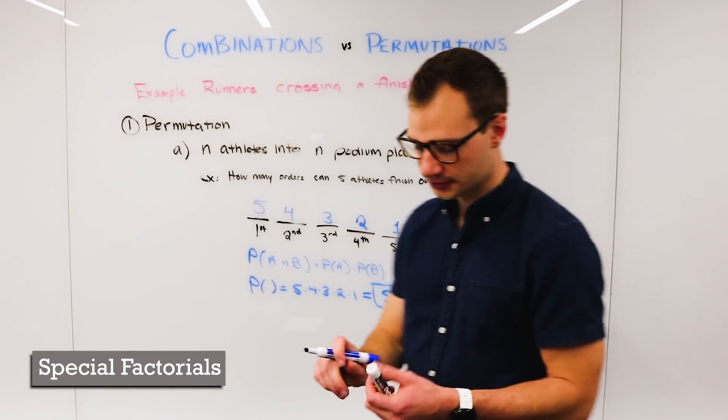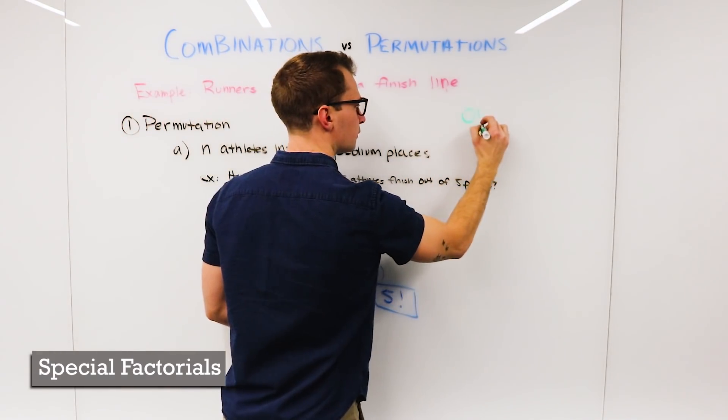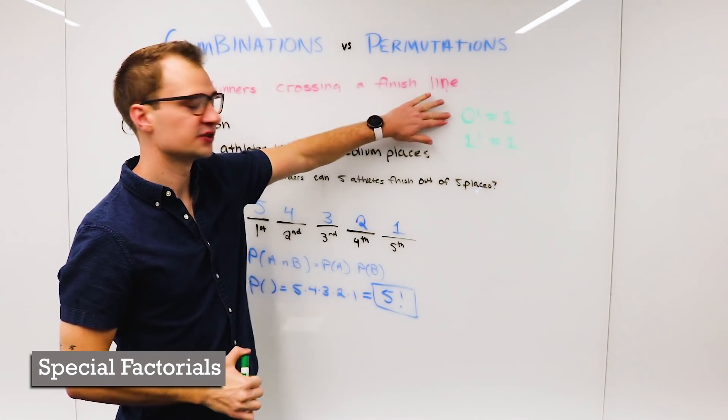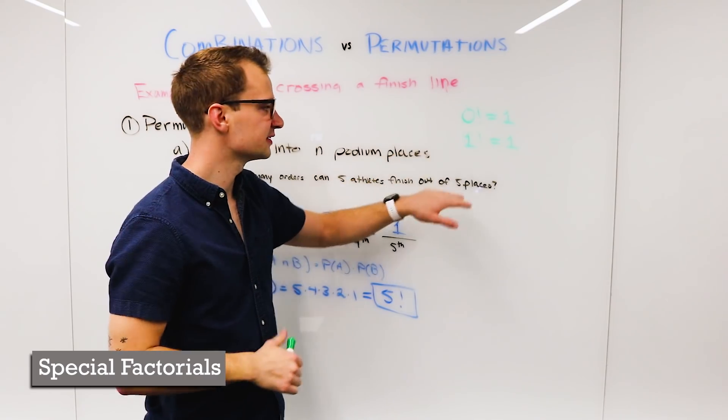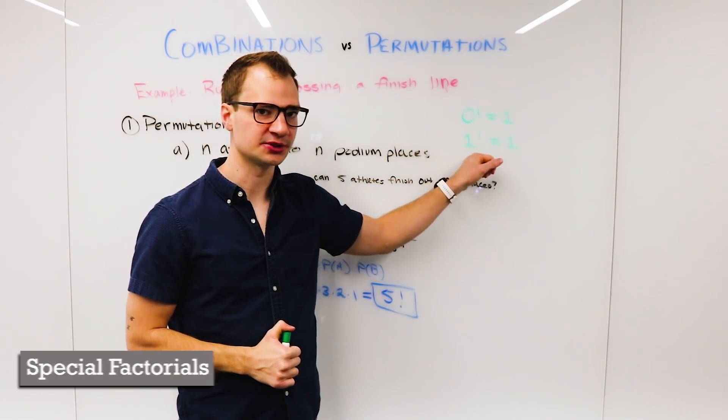Now while we're talking about factorials, there are two special cases to keep in mind. There's one way to arrange zero objects out of zero objects, and there's also one way to arrange one object.